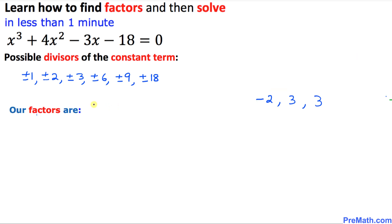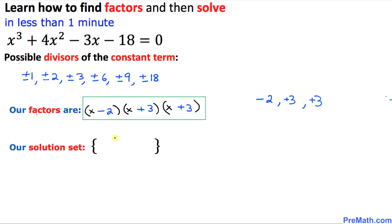So the factors are three parentheses each with x, giving us (x − 2)(x + 3)(x + 3). The solution set changes the signs: negative 2 becomes positive 2, and positive 3 becomes negative 3. So the solutions are x = positive 2, negative 3, and negative 3. These are our final answers.